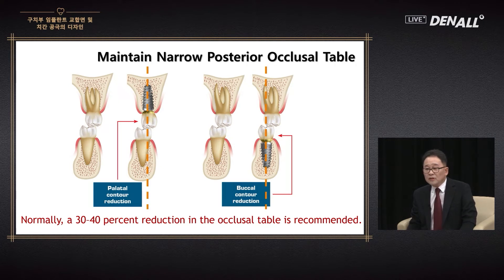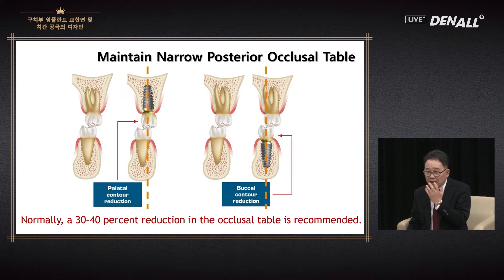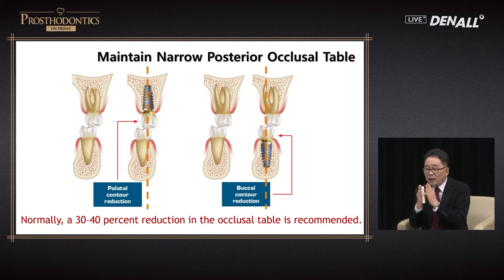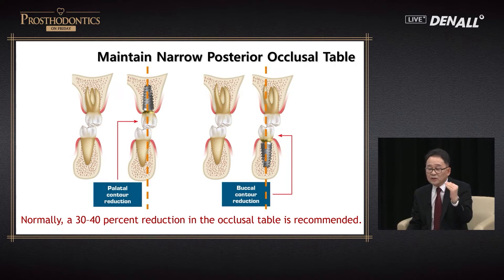A 30 to 40% reduction in the occlusal plane is recommended. If we are to do the reduction on the maxilla, palatal reduction; in the mandible, buccal reduction would be recommended. In most cases, when bone is resorbed on the maxilla, the arch size is reduced and implants tend to be placed inwardly. Therefore, we need to place it a little bit outwardly for better intercuspation. The opposite is true for the mandible — palatal reduction in the maxilla and buccal reduction in the mandible is recommended.